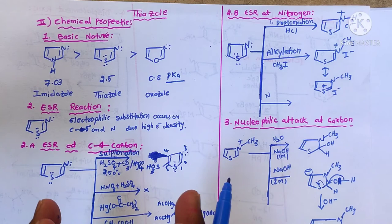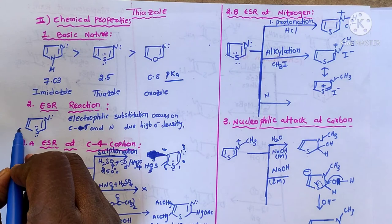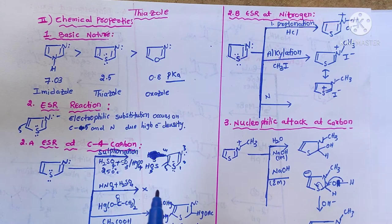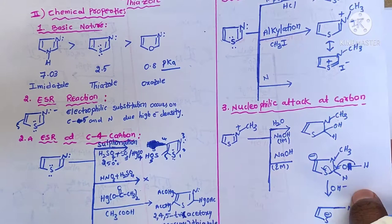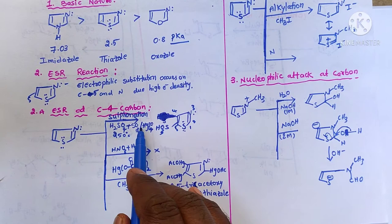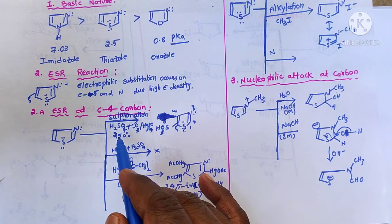Now we go for the electrophilic substitution reactions, where the electrophile will be substituted either at the fifth position or on the nitrogen. For sulfonation we use oleum — a mixture of sulfuric acid and sulfur trioxide — with mercuric sulfate as catalyst, heated at 250 degrees centigrade, and we get 5-sulfo thiazole.